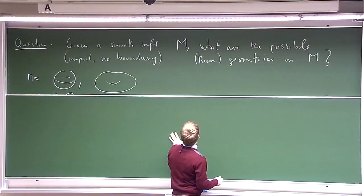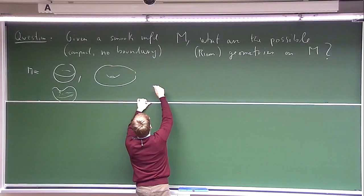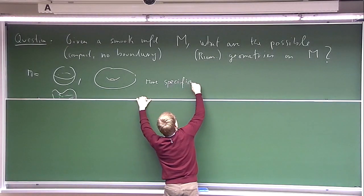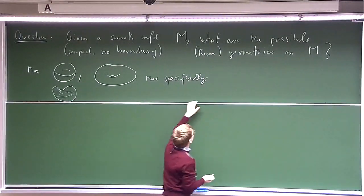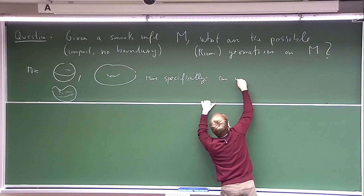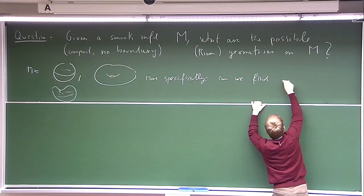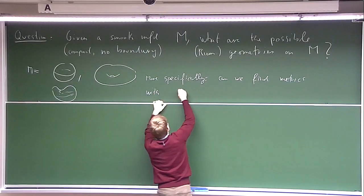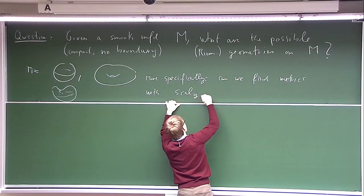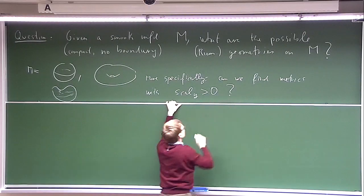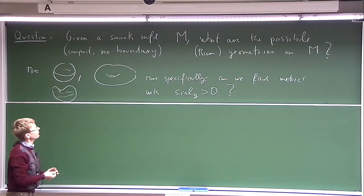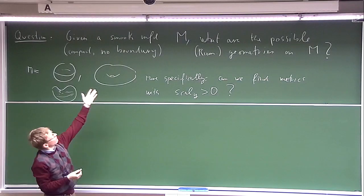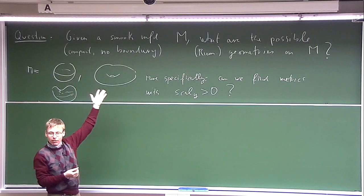Inspired by this, let's be a bit more specific. The question is: can we find metrics such that the scalar curvature function is everywhere positive? This makes the general question slightly more specific, and now we have a very concrete question to answer.